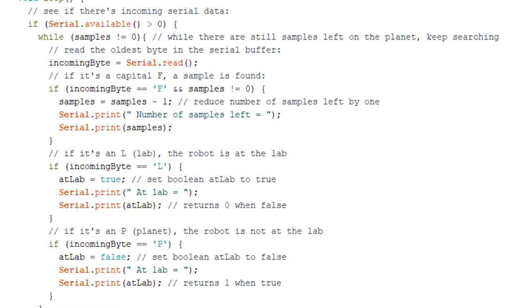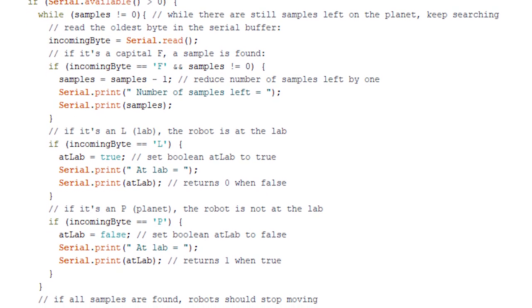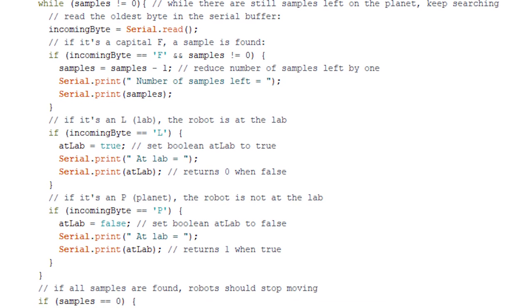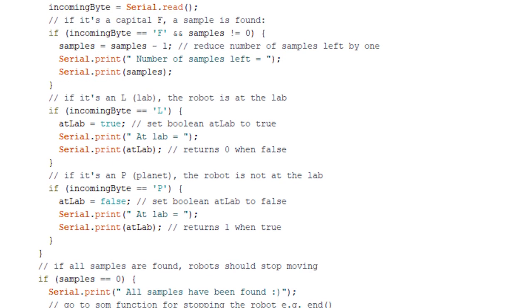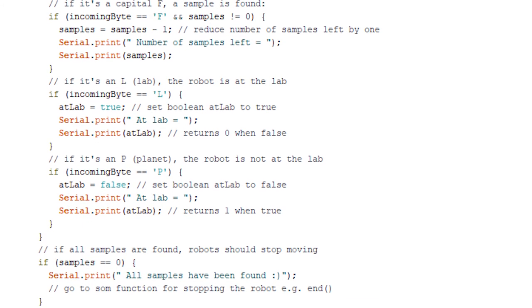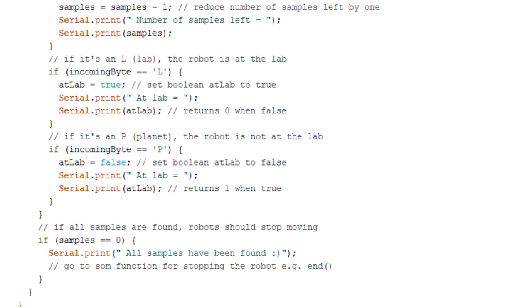For receiving an F, the robot will subtract 1 from the number of samples that are still left on the planet. When it receives an L, it knows that the other robot is currently at the lab. When it receives a B, it will know that the other robot is currently on the planet and searching for samples.